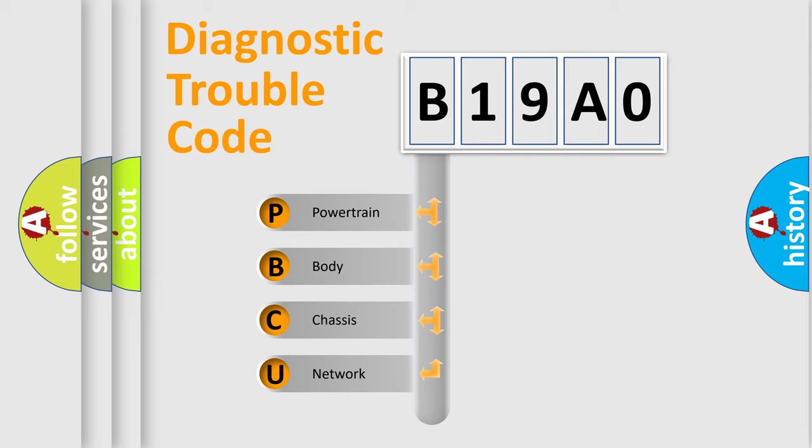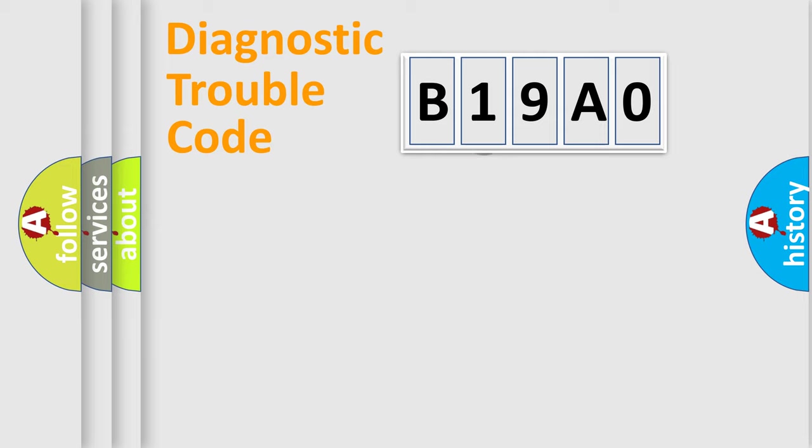We divide the electric system of automobile into four basic units: Powertrain, body, chassis, network. This distribution is defined in the first character code.